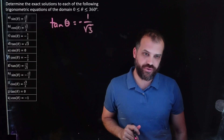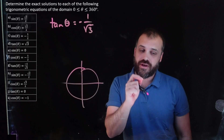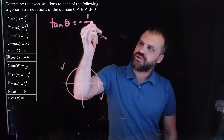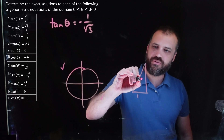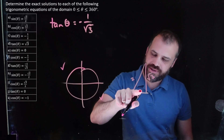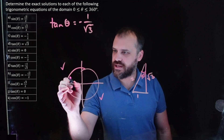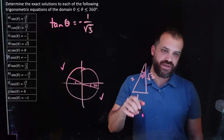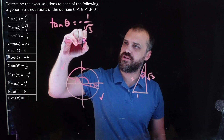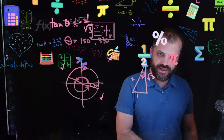Tan θ = -1/√3. Draw a circle. The answer is negative, and tan is negative in quadrant two and quadrant four. One on root three — that's a triangle I know about. Tan is opposite over adjacent, so this must be the 30-degree angle. Drawing 30 degrees from the x-axis in those quadrants. Theta equals 150 degrees or 330 degrees.